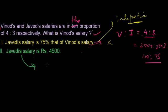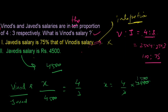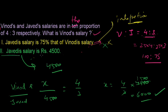Statement two: Javed's salary is 45,000. If Javed's salary is 45,000, let Vinod's salary be X. Then X divided by 45,000 equals the ratio 4 to 3. Therefore X equals 4/3 into 45,000, which is 60,000. Yes, I got the answer from statement two alone. So I don't need to check the combination of the statements. The answer is option B — I'm getting the answer from statement two, not from statement one.